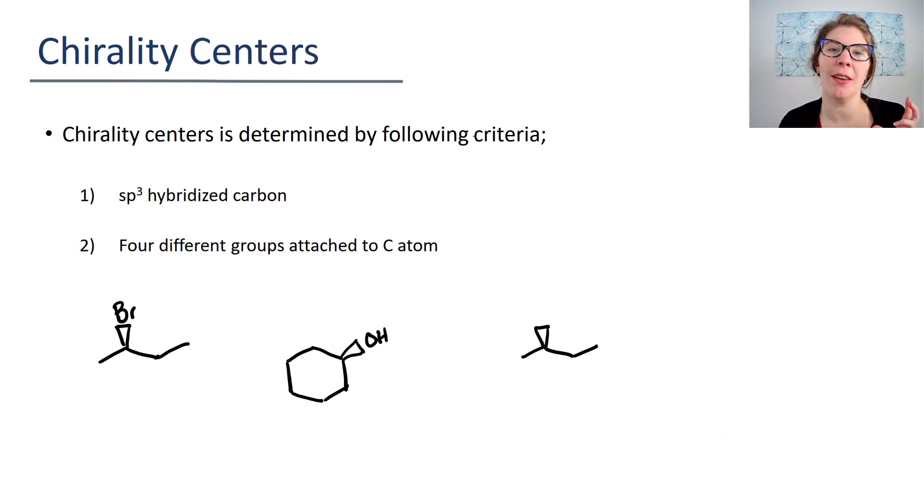In chemistry, what we find is that there's chirality centers. Now, chirality centers have all different kinds of names. Some people call them stereocenters. Some people call them stereogenic centers. Someone call them chiral centers. It's all the same thing. Well, it's technically not, but for your level, sure. Let's just call it the same thing. So your chirality centers are going to have the two criteria that are listed below.